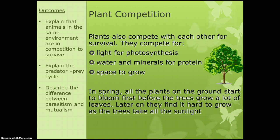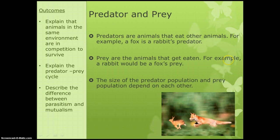An example of this is that in spring all the plants on the ground start to bloom first before the trees grow. This is because if they don't do it early they won't be able to get enough light to grow, as the trees will take up all the sunlight.